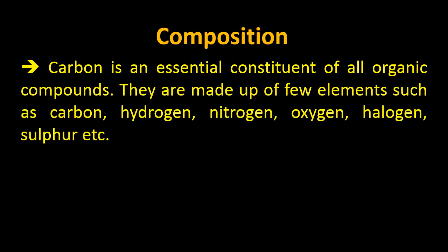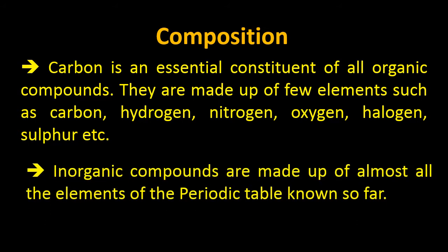Now, what are organic compounds made up of? Carbon is an essential constituent of all organic compounds. They are made up of a few elements such as carbon, hydrogen, nitrogen, oxygen, halogens and some others. Inorganic compounds, by contrast, are made up of almost all the elements of the periodic table known so far.